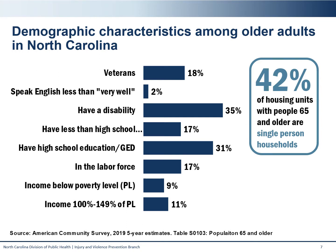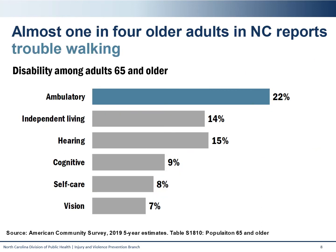Further, 42% of housing units with people over 65 are single-person households. This is important as an older adult left alone after a fall may have more serious outcomes if there isn't someone there to find them. Of the population of older adults with a disability in North Carolina, we see that the most common type is an ambulatory disability. This factor further increases an individual's risk for falling.